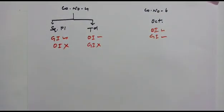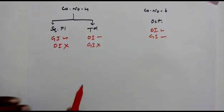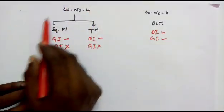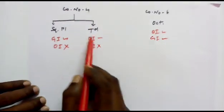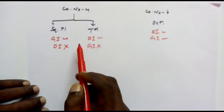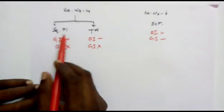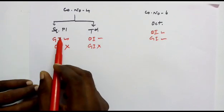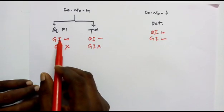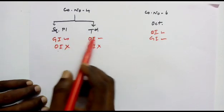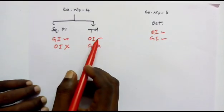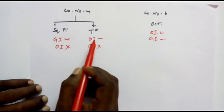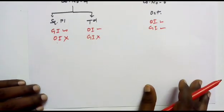In this video we are going to concentrate on square planar and tetrahedral complexes. Remember: square planar complexes have no optical isomers, only geometrical isomers. Tetrahedral complexes have no geometrical isomers, only optical isomers.